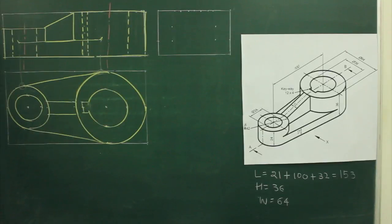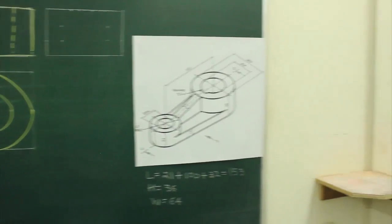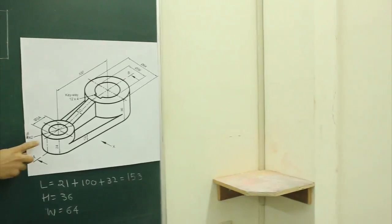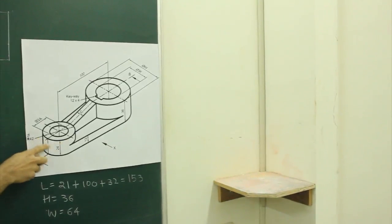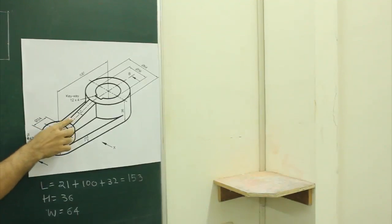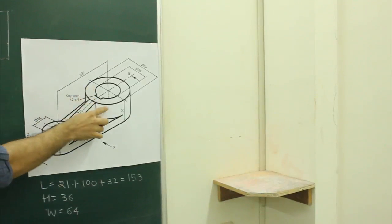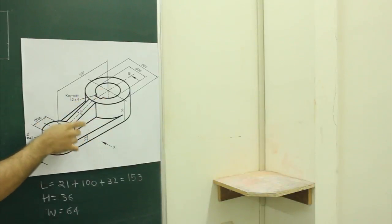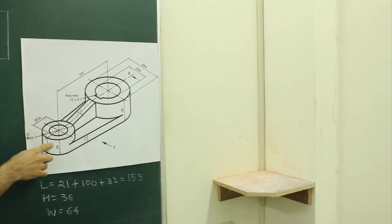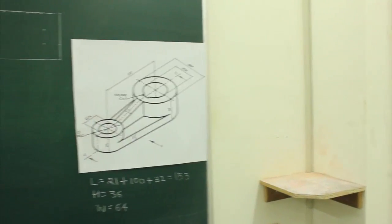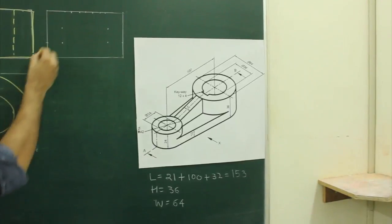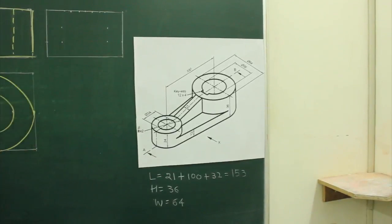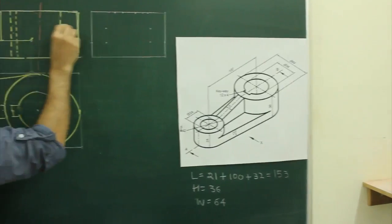Now we need to draw the side view. When I see from this side, the main object — you see this will be a rectangle with a dotted line, then I will see this slot, then again this circular part which will appear as a rectangle. So first I will draw this part; I can project from the front view.